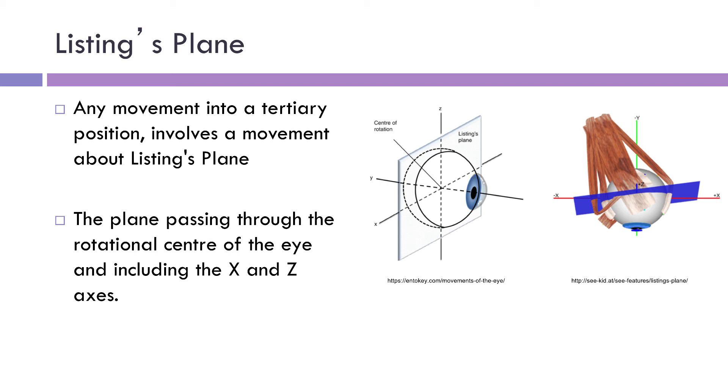The importance of this imaginary plane, Listing's plane, is that any movement into a tertiary position will involve a movement around Listing's plane. What does this mean? It means that if the eye's not moving just left or right or up or down, but wants to do a movement which combines horizontal and vertical.